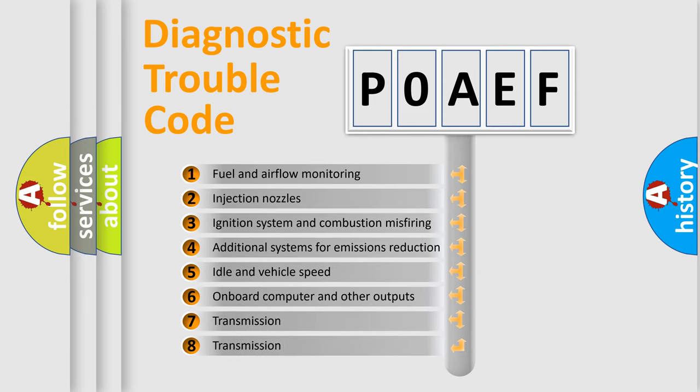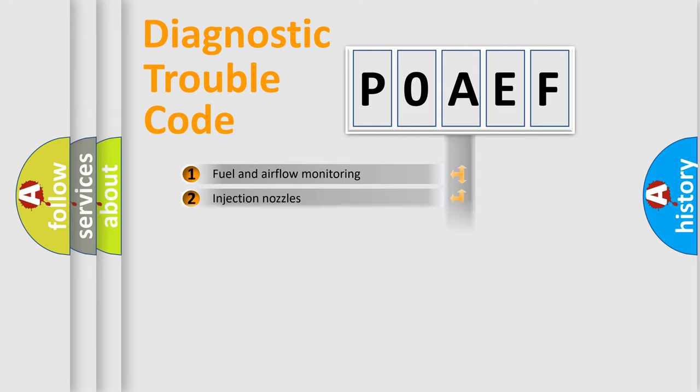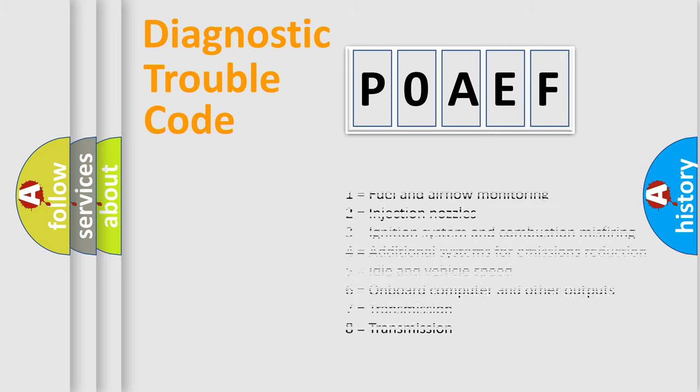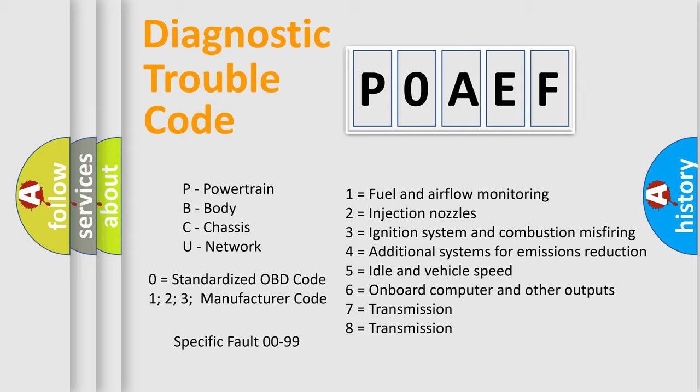The distribution shown is valid only for the standardized DTC code. Only the last two characters define the specific fault of the group. Let's not forget that such a division is valid only if the second character code is expressed by the number zero.